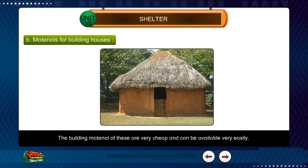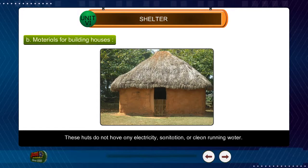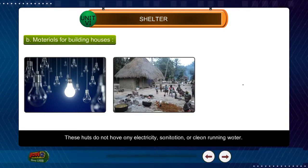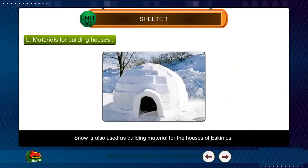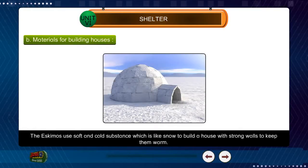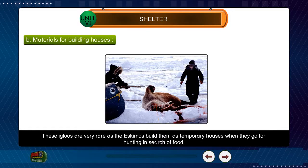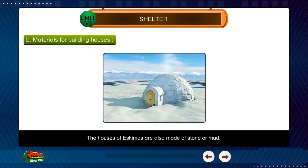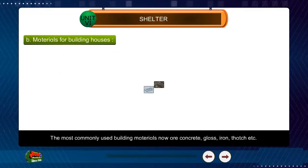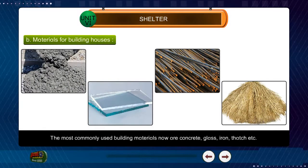The building materials for huts are very cheap and easily available. These huts do not have any electricity, sanitation or clean running water. Snow is also used as a building material for the houses of Eskimos. The Eskimos use snow to build houses with strong walls to keep them warm. These igloos are very rare, as Eskimos build them as temporary houses when they go hunting for food. The houses of Eskimos are also made of stone or mud. The most commonly used building materials now are concrete, glass, iron, thatch, etc.